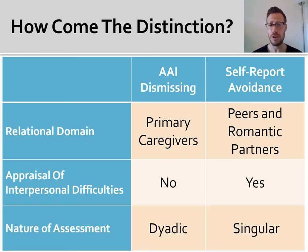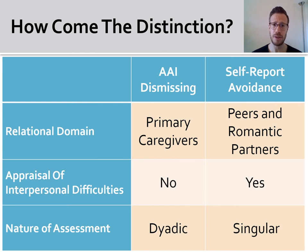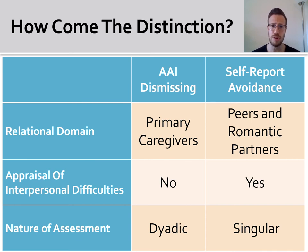Lastly, the nature of both assessments is quite different. Unlike self-report measures, the AAI is a dyadic assessment where participants' attachment patterns are indicated also by their ability to respond to the interview questions in an organized and collaborative manner. Individuals who are classified as insecure dismissing in the AAI exhibit real-time redirection of their attention away from the interviewer's attachment-related questions. As such, the AAI may provide a more ecologically valid assessment of the attachment avoidance strategy compared to the self-report.